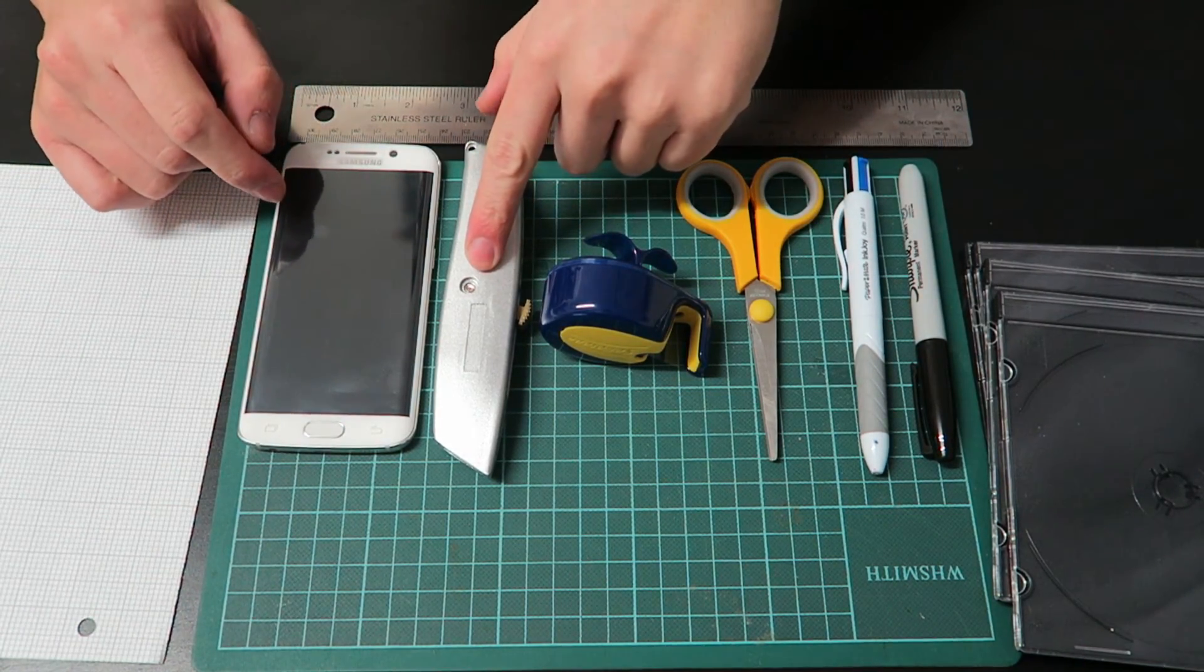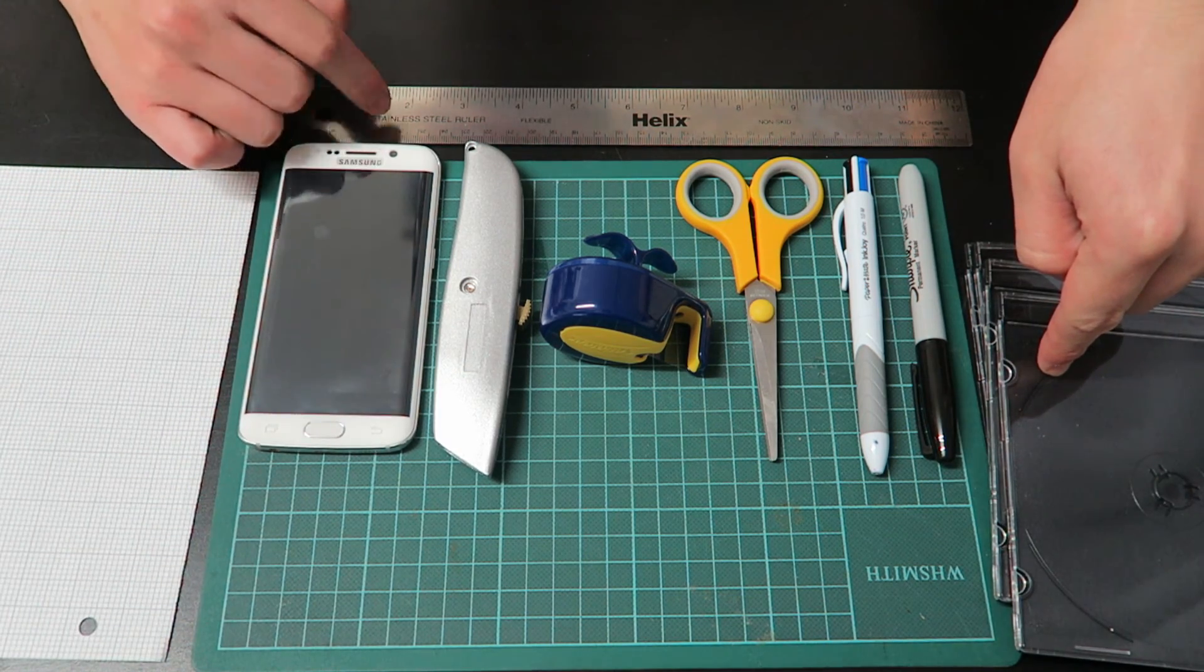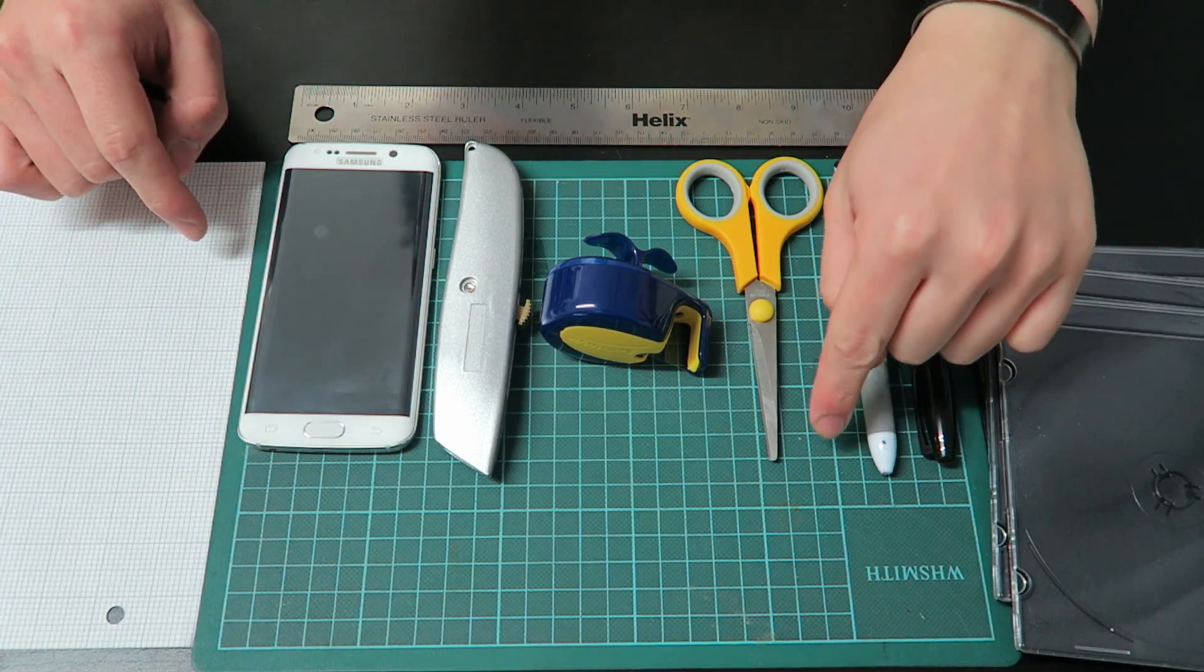A crafting knife or something sharp to cut the plastic with, a phone, a ruler, and some graph paper. The cutting mat is optional, but if you don't want to ruin the surface of the table, then I highly suggest it.